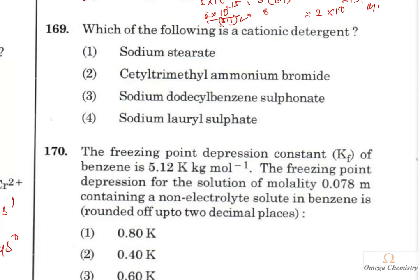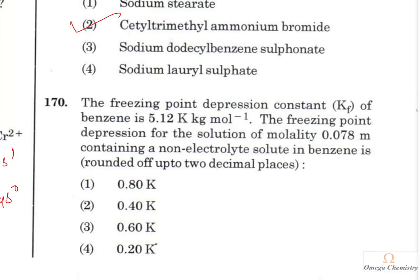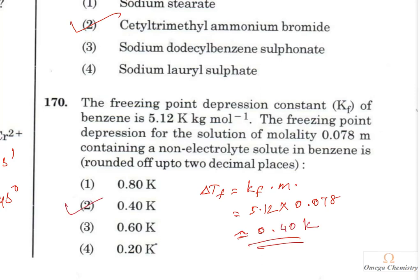Question 177: Which of the following is a cationic detergent? Option 2 (cetyltrimethylammonium bromide) is the right answer. Question 178: The freezing point depression constant Kf of benzene is 5.12 K·kg/mol. For a solution of molality 0.078 mol/kg with a non-electrolyte solute: ΔTf = Kf × m = 5.12 × 0.078 ≈ 0.40 K. Option 2 is the right answer.